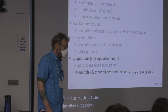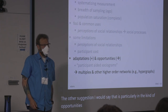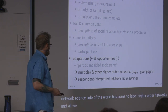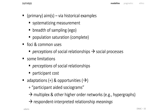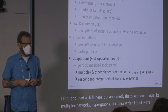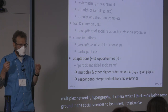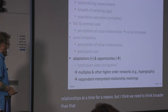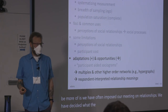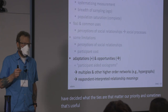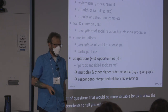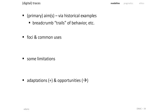Another opportunity in the social sciences is what the network science side has come to label higher-order networks — things like multiplex networks and hypergraphs. I think we're losing some ground on this in the social sciences. We've focused on single relationships at a time for a reason, but we need to think broader going forward. I would also argue that surveys should do more to allow respondents to tell us what ties matter for the processes we're trying to study, rather than us imposing our meaning on relationships a priori. I'm going to make a claim later that might be a little controversial in that regard.